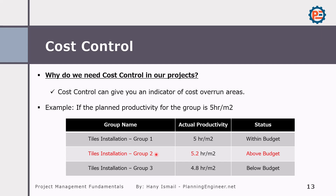Another benefit of cost control is monitoring the productivity of groups. Here we have three groups all doing tiles installation. We monitored the actual productivity and found that group one needs five hours per square meter, group two took 5.2 hours per square meter, and group three took 4.8 hours per square meter. The planned productivity is five hours per square meter.